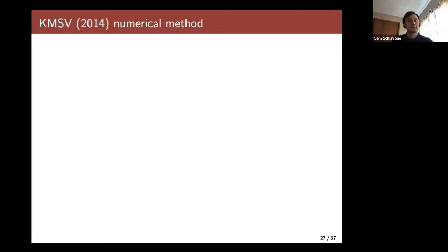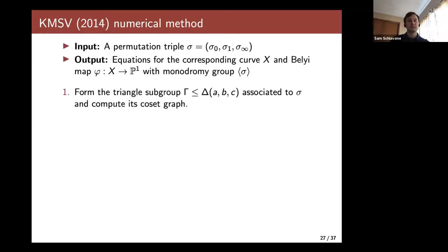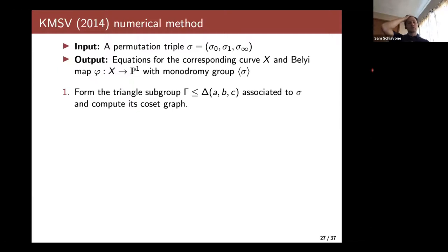In 2014, in a paper with Mike Klug, Mike Musty, myself, and John Voight, we presented a numerical method for computing Belyi maps. Our method takes as input a permutation triple sigma and gives as output equations for the corresponding curve X and the Belyi map phi defined on X with the monodromy group generated by sigma.